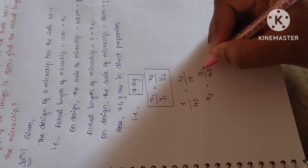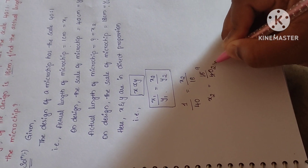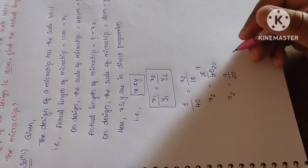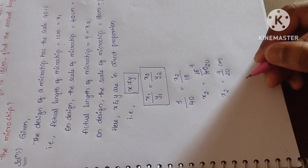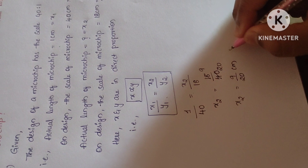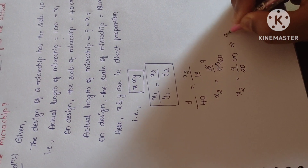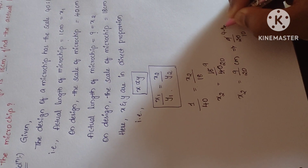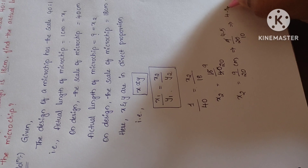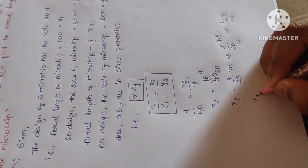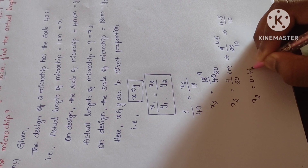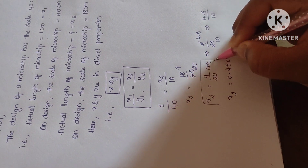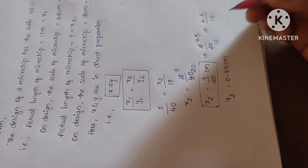After cross multiplication, x2 equals 1 into 18 by 40. We simplify using the 2 times table: 2 nines are 18, 2 twenties are 40. So x2 equals 9 by 20 centimeters. To convert further: 9 by 20 gives 4.5 by 10, and dividing by 10 moves the decimal, so x2 equals 0.45 centimeters.